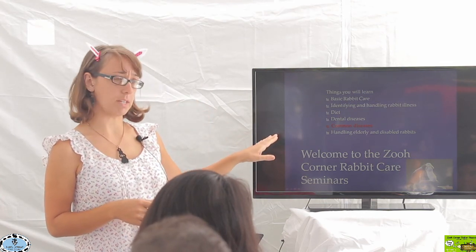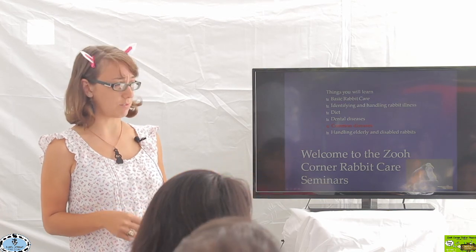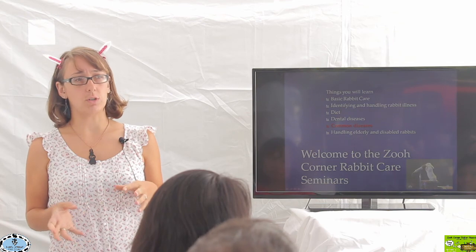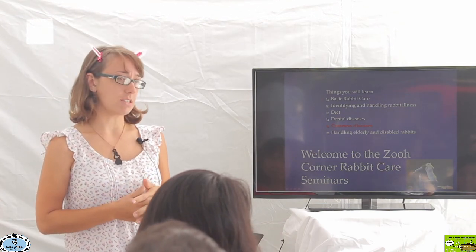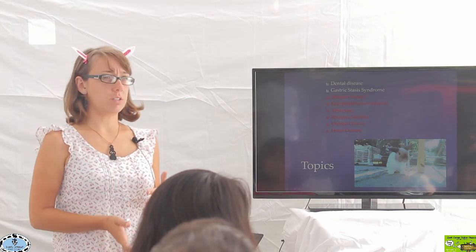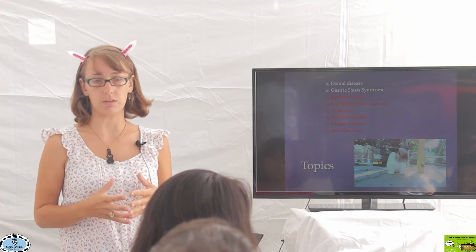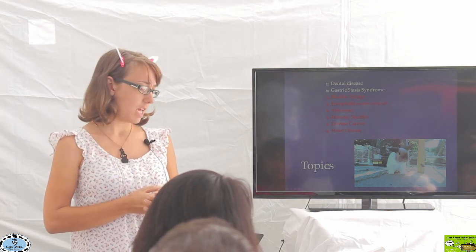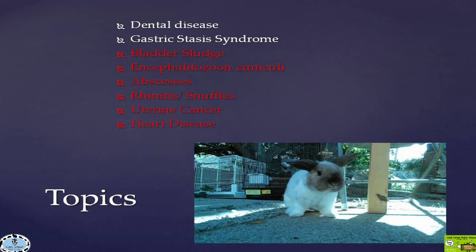Today we're talking about the common illnesses and diseases of rabbits. The last seminar in this year's series will cover handling elderly rabbits or rabbits with disabilities, at the end of November. Today's topics include bladder sludge, E. caniculi (encephalitozoon cuniculi), abscesses, upper respiratory infections, uterine cancer, and heart disease in rabbits.